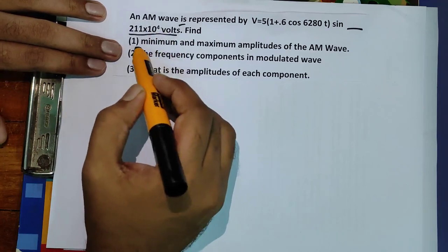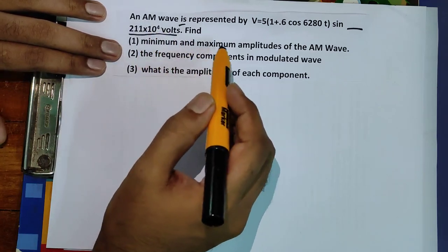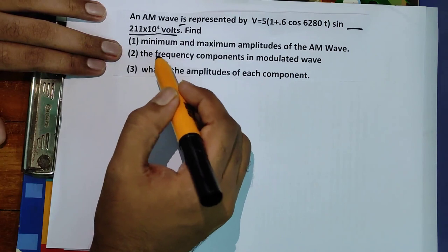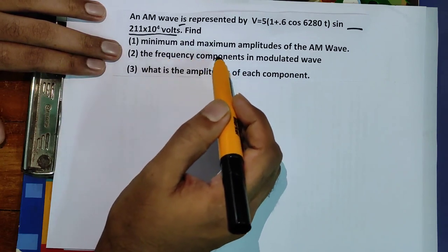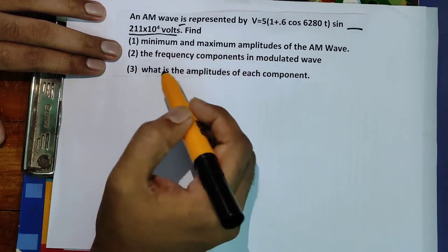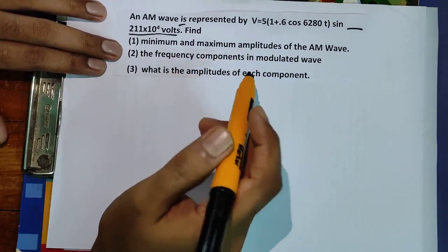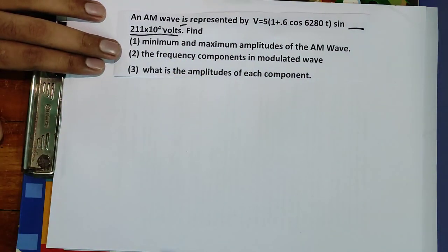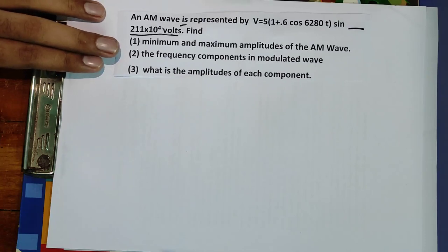Find: the minimum and maximum amplitude of the AM wave, the frequency components in the modulated wave, and the amplitude of each component.